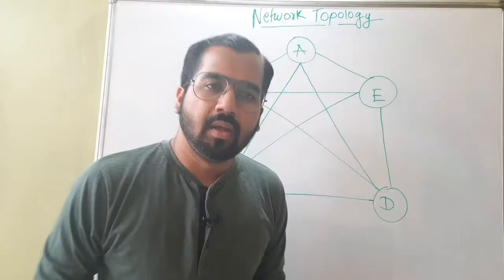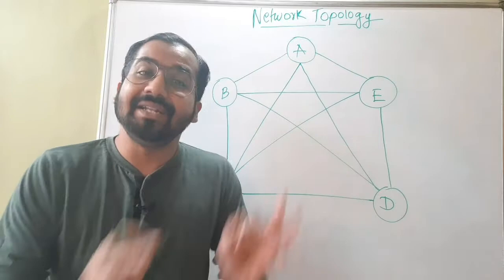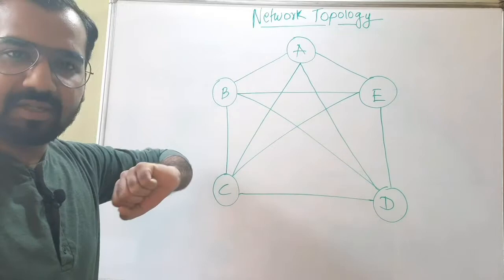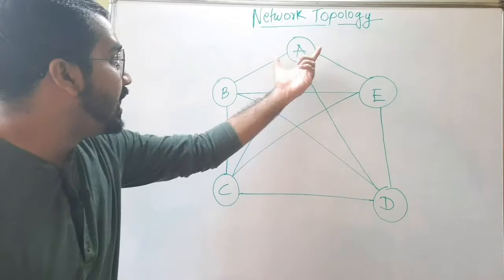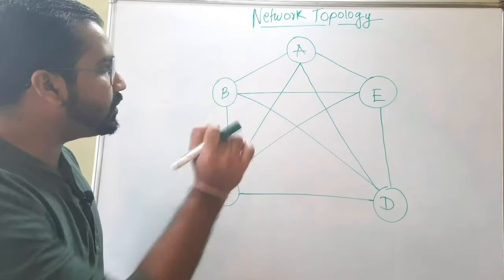Now let's move to the last topology: mesh topology. Note that it is spelled M-E-S-H, not M-E-S-S. In this visual, let's consider a network with only five devices, named A, B, C, D, and E. The lines you see are the links or cables being used to interconnect all the devices in the network.